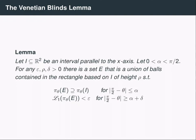Recall the lemma from the previous video about Venetian blinds: for any interval parallel to the x-axis and any small number alpha, and for positive numbers epsilon, rho, and delta, we can find a set E that is a union of balls contained in a very small rectangle of height rho around the interval I, so that the projection of E in direction theta contains the projection of I whenever theta is within alpha of pi/2. For angles far away from pi/2 — at least alpha plus delta away — the projections have small Lebesgue measure. There is an intermediate range between alpha and alpha plus delta where we don't know what happens, but that's acceptable because it is a very tiny range.